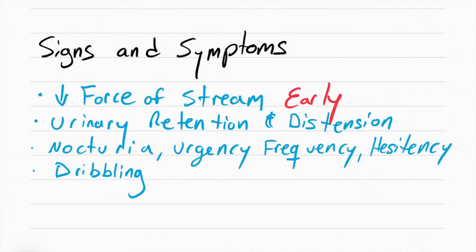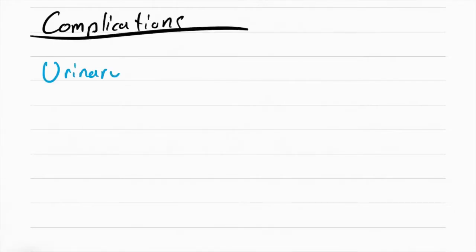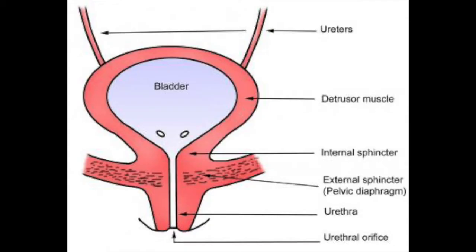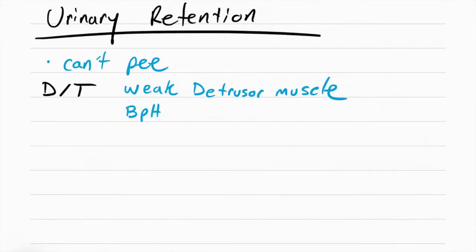The main complication is urinary retention. This is something that we learned in fundamentals and we need to know what type of complications it can cause. Urinary retention is when the patient can't pee. There's a lot of reasons why the patient wouldn't be able to pee. It could be a weak detrusor muscle, it could be BPH like we're talking about right now, it could be renal calculi, so a kidney stone.